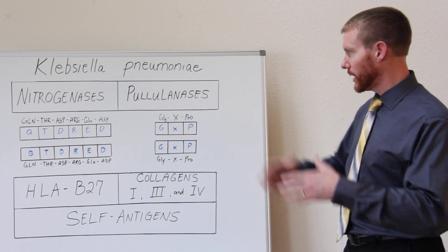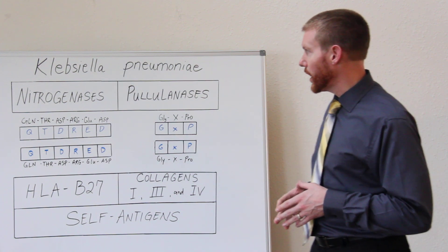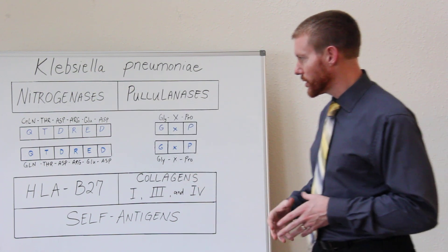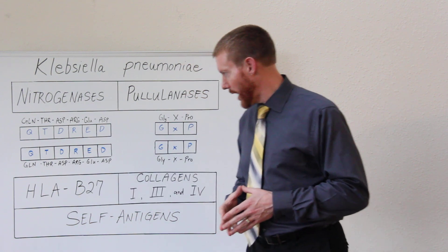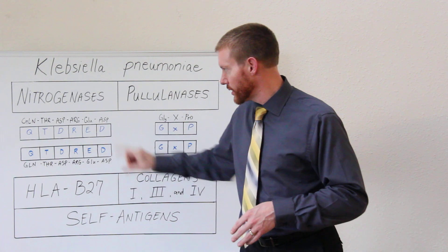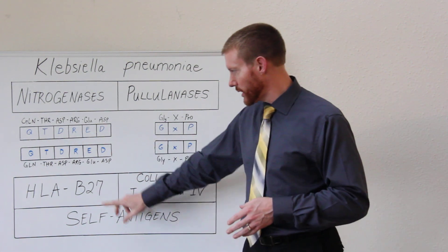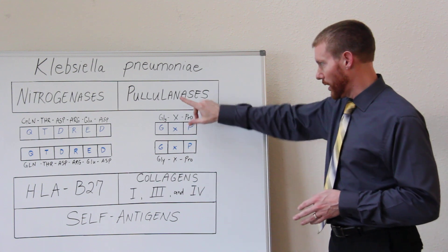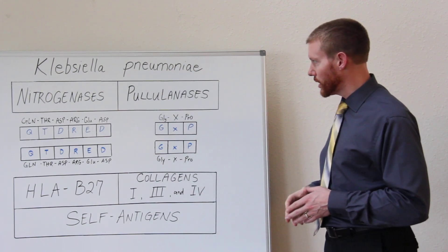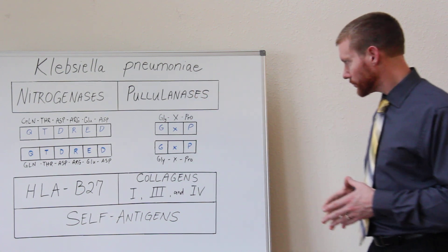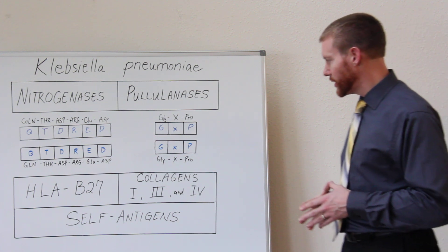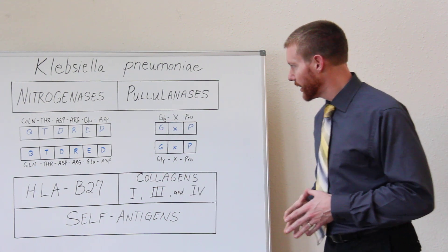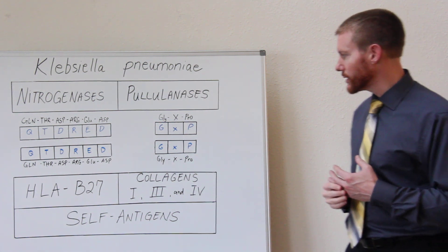So the immune system, because of the process of molecular mimicry, will think that this protein produced by Klebsiella is bad, and it will also think that tissues high in HLA-B27 are also bad because they have the same amino acid sequence. The immune system cannot tell the difference between these cells containing HLA-B27 and the protein produced by the Klebsiella bacteria. Same thing with this other protein produced by Klebsiella — the immune system will identify it, recognize it in the gut, go throughout the bloodstream, and attack tissues it thinks are bad: collagen types 1, 3, and 4, because they have an identical amino acid sequence. That is the process of molecular mimicry.